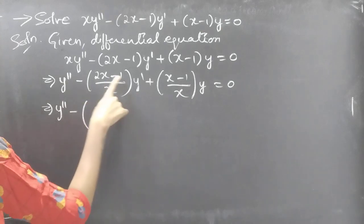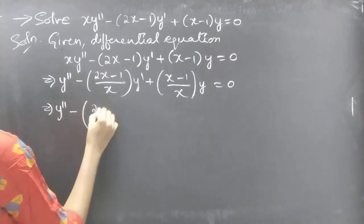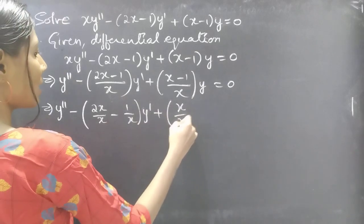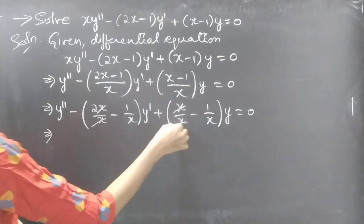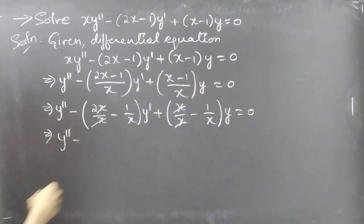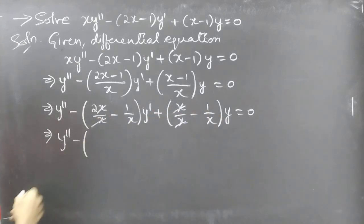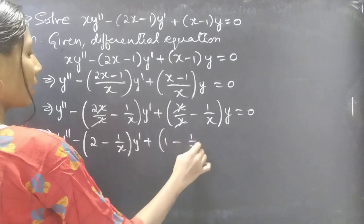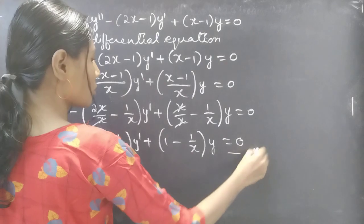Since the numerator has two terms and the denominator has one term, we split each fraction. We get y'' − [2x/x − 1/x]·y' + [x/x − 1/x]·y = 0. After cancellation, this becomes y'' − (2 − 1/x)·y' + (1 − 1/x)·y = 0. This is equation number 1 — the standard form.